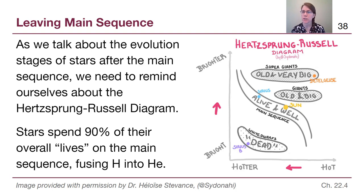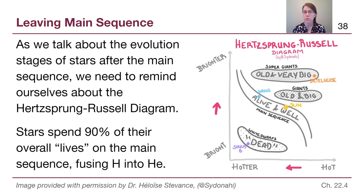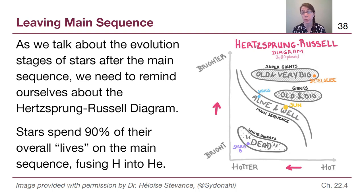I like this cartoon-like Hertzsprung-Russell diagram because the distinction between stars along the main sequence — alive and well, spending 90% of their lives turning hydrogen into helium and glowing steadily — compared with the older giants and supergiants is clear. They are 'old' because the only objects that go into that upper right part of the diagram are objects that were on the main sequence and then have left it.